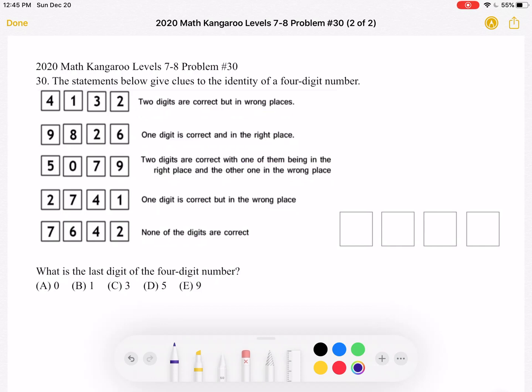Well looking through all of this, we can see that it's probably a good idea to start with this last statement. None of the digits are correct because that way we can eliminate the digits in the other ones in order to figure out which two, for example, in this one are correct or which one is correct in that one. So let's start with the last statement.